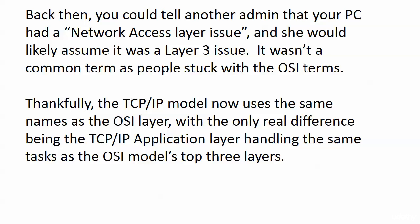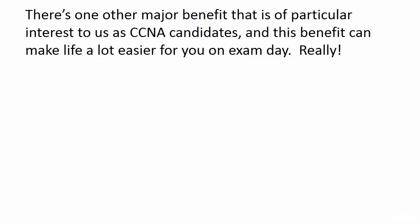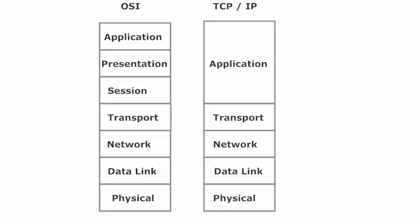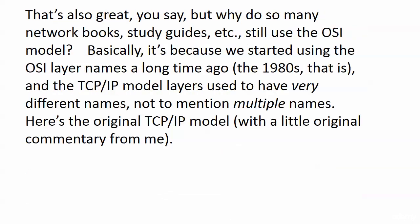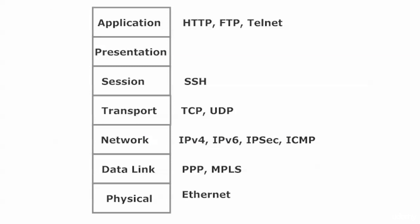People stuck with OSI terms, and that's a major reason the OSI model is still around. Thankfully, the TCP/IP model now uses the same names as the OSI layers, with the only real difference being at the top. There's your mapping — it's much easier than it used to be, but you should still be familiar with it, especially which TCP/IP layers map to OSI layers. Here's a partial list of protocols shown at which OSI layer they operate — we'll cover all of these during the course. Coming up next, we're going to talk about Ethernet and the physical layer.